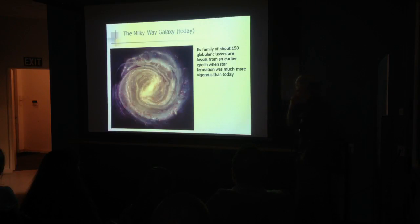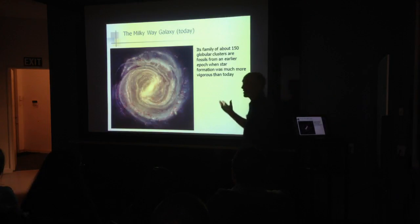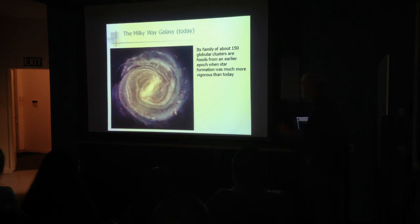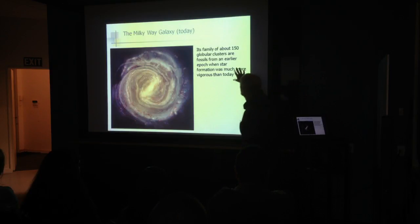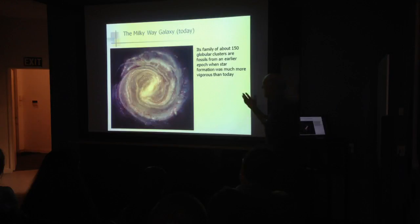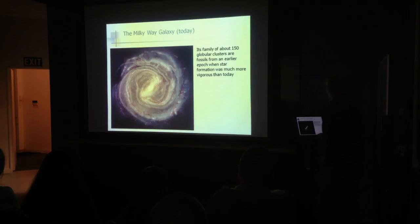There are about 600 globular clusters around the Andromeda galaxy, and other big galaxies have thousands. The Milky Way doesn't form them anymore, so all our globular clusters contain old stars.